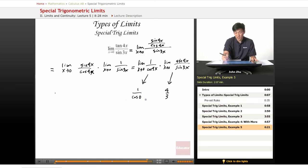And 1 over cosine of 0 is just 1 over 1, which equals 1. So 1 times 4 over 3 equals 4 over 3, 4 thirds.